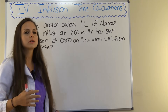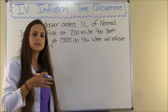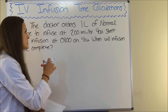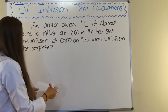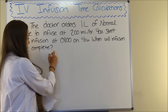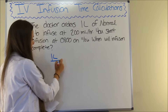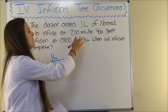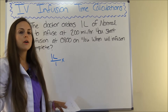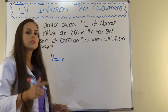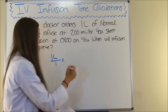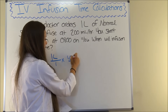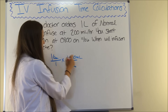Let's work the problem and see when it will end. I like to use dimensional analysis when setting up my problems — that's how I was taught and I think it's a great way to solve dosage and calculations problems. So, one liter, because that is what the doctor has ordered, and we're going to have to convert liters to milliliters because that is what we're running it at. We know from the metric table there is one liter in a thousand milliliters, so one liter equals a thousand milliliters. Liters cancels out.